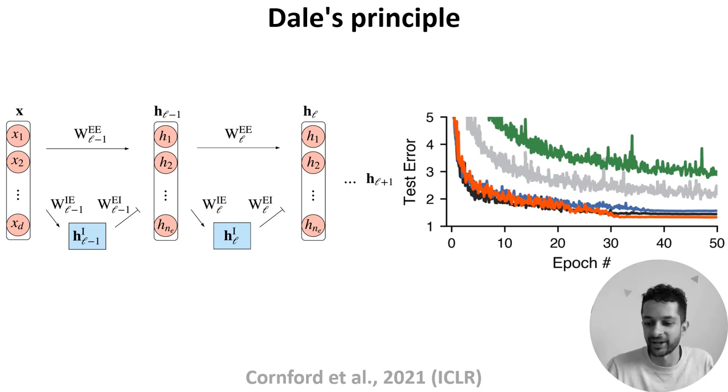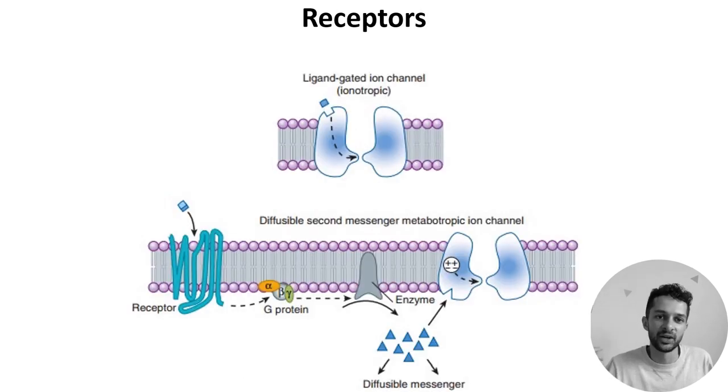Okay, back to neurotransmission. Once released, neurotransmitters diffuse across the synaptic cleft, bind receptors embedded in the cell membrane, and trigger different effects. There are hundreds of receptors which are all specific to different neurotransmitters, but they fall into just two major classes.